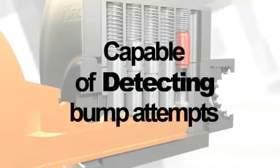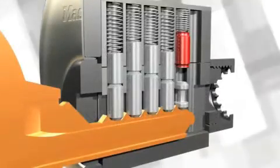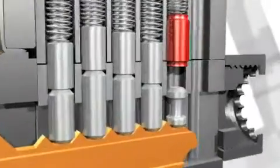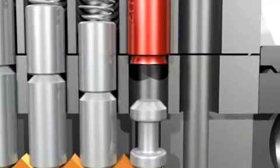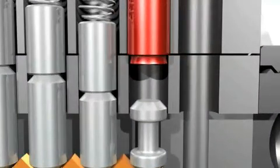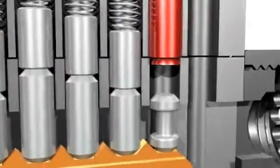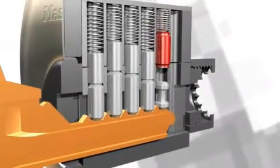And it's also capable of detecting bump attempts. The main component of the bump stop technology is an innovative new top pin design, which is aligned with a bottom spool pin. The pin has a reverse taper on its end. With its oversized tumbler diameter, the pin is prevented from fully entering the plug.